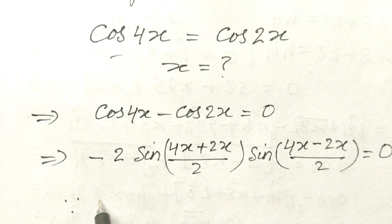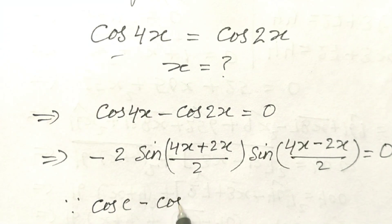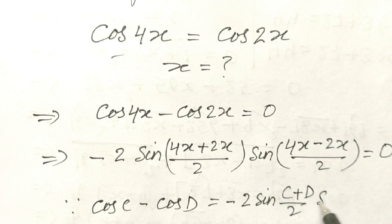Because cos C minus cos D is equal to minus 2 sin C plus D by 2, sin C minus D by 2.